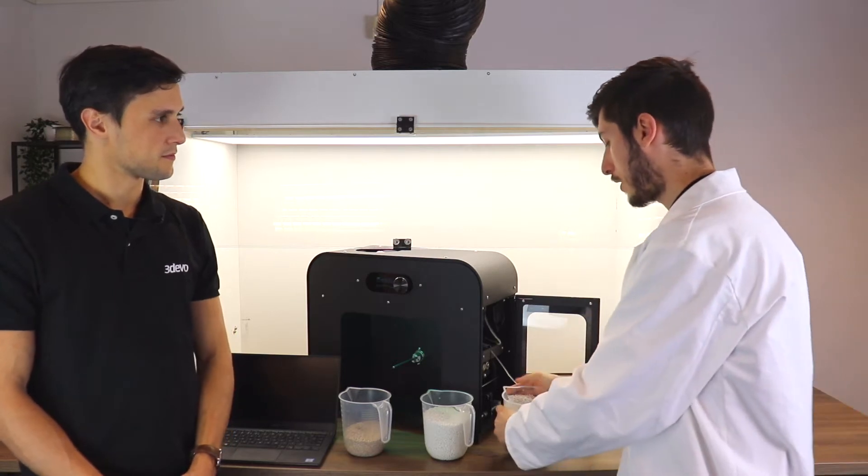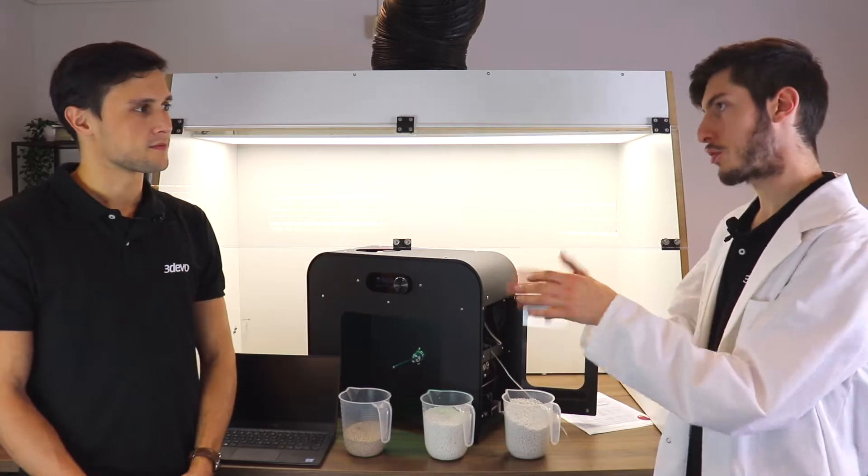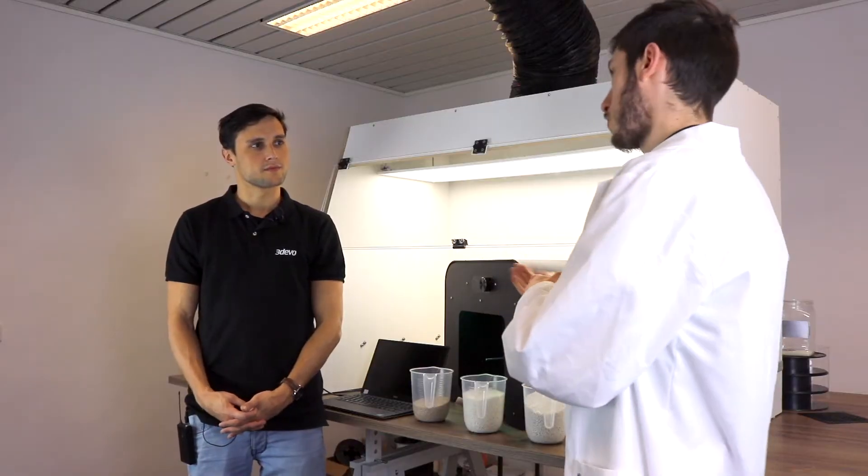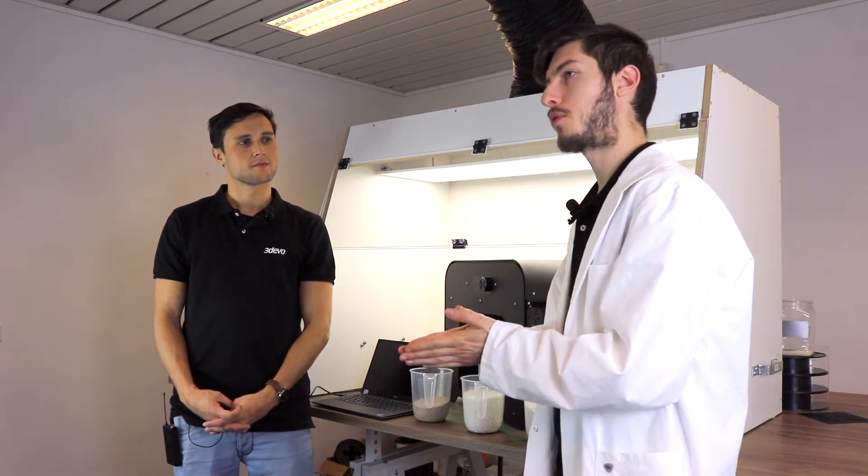I'm putting in approximately 50 grams of DevoClean mid temp and I will keep adding small portions of it until all of the PLA is completely gone from the barrel and I will keep adding some because we're going to heat up the temperatures afterwards.